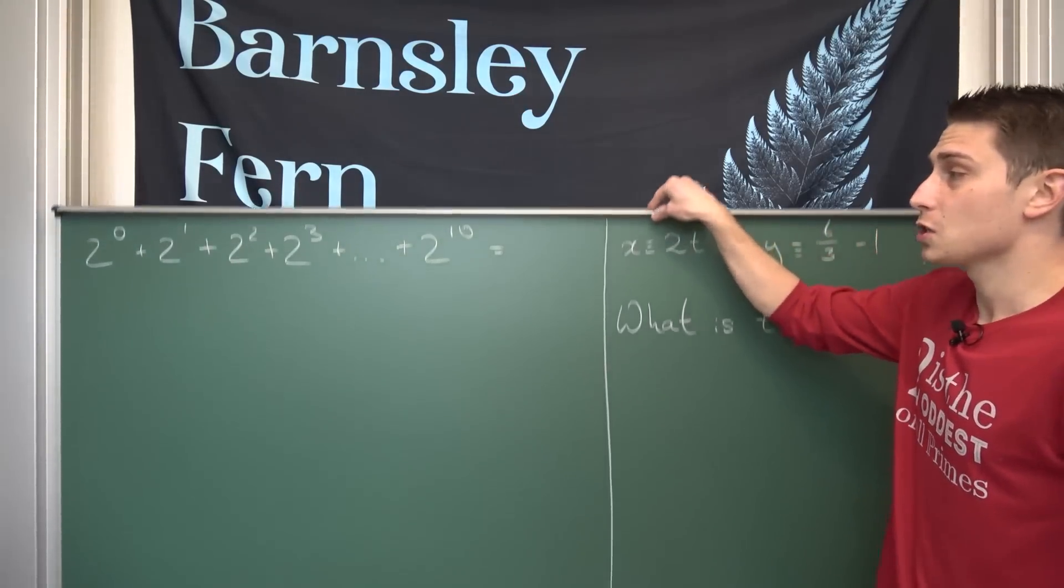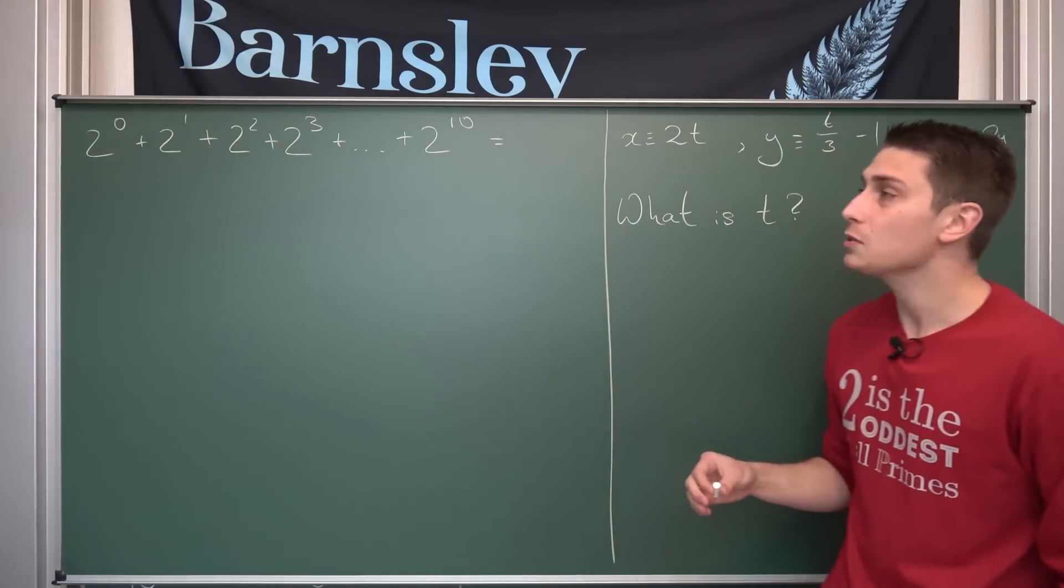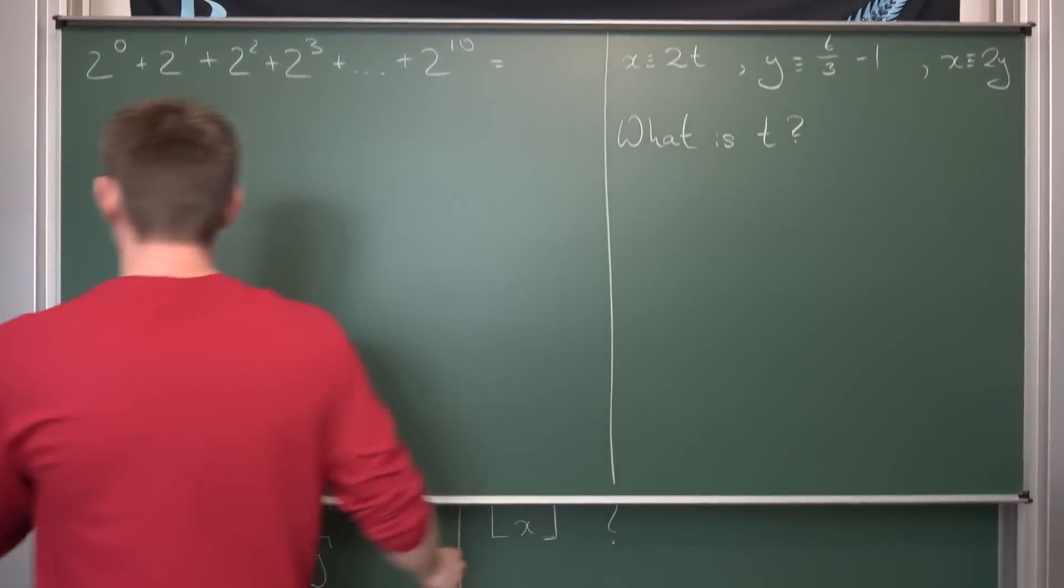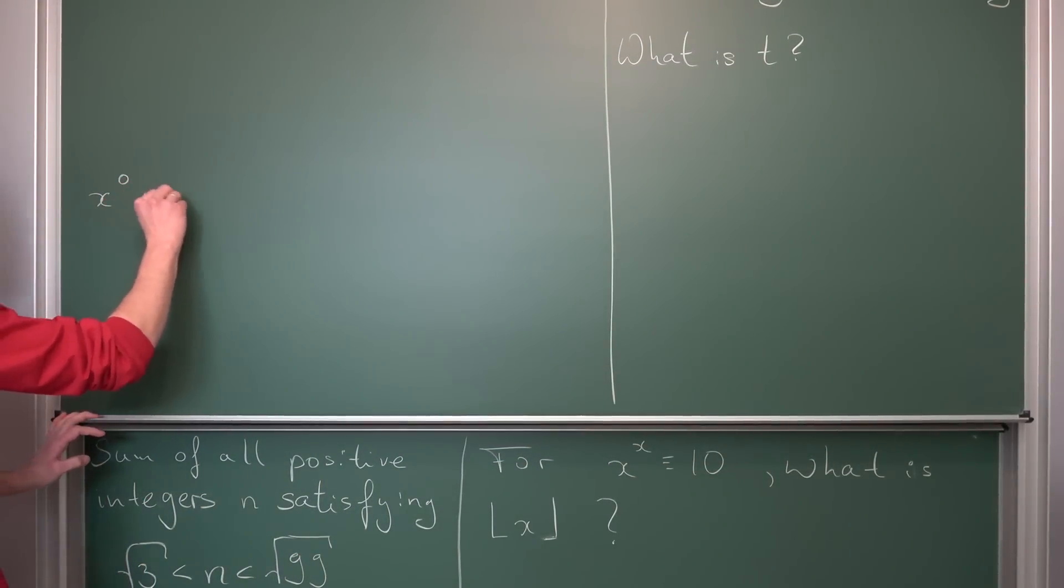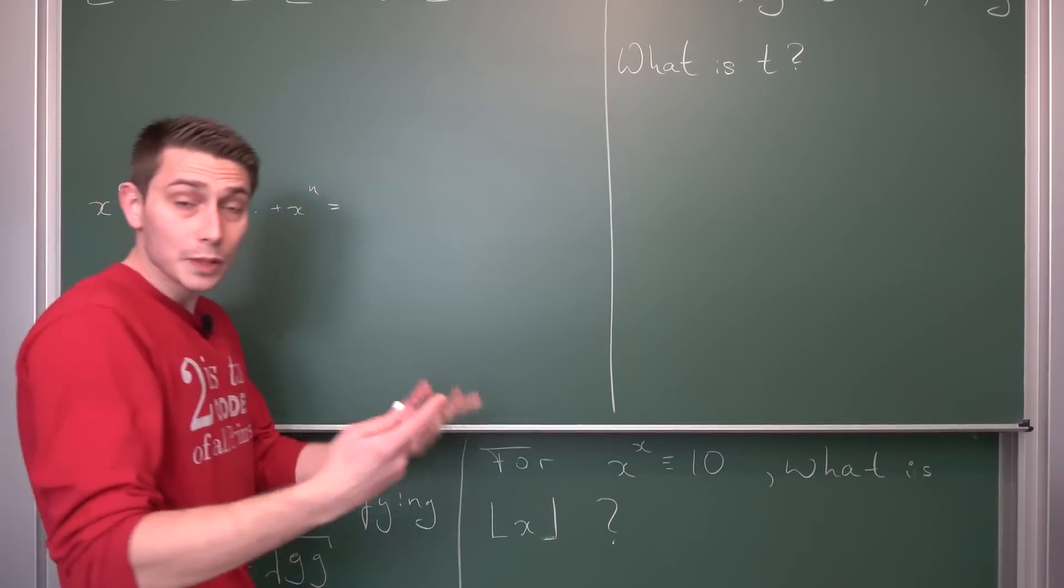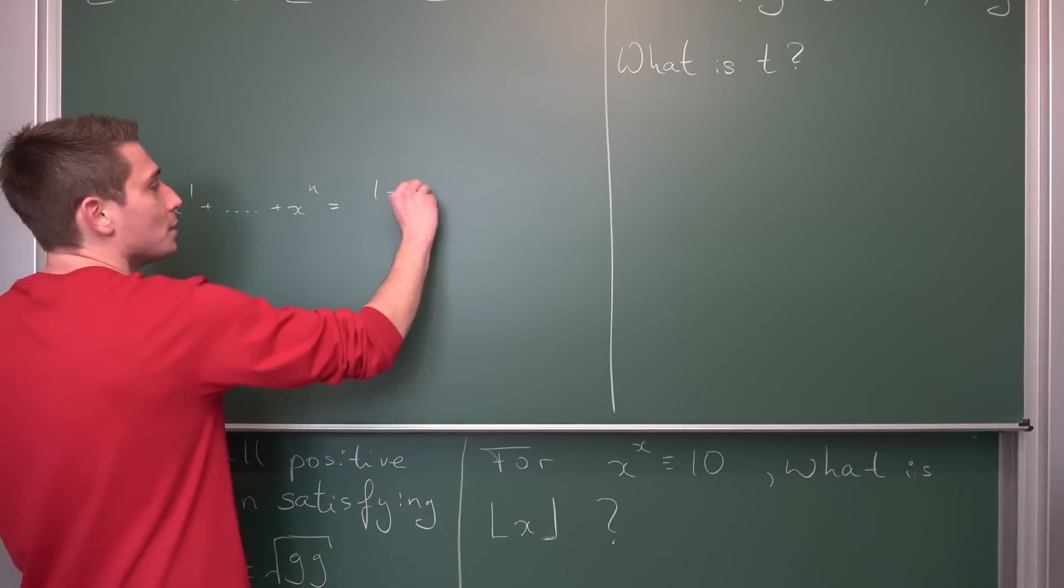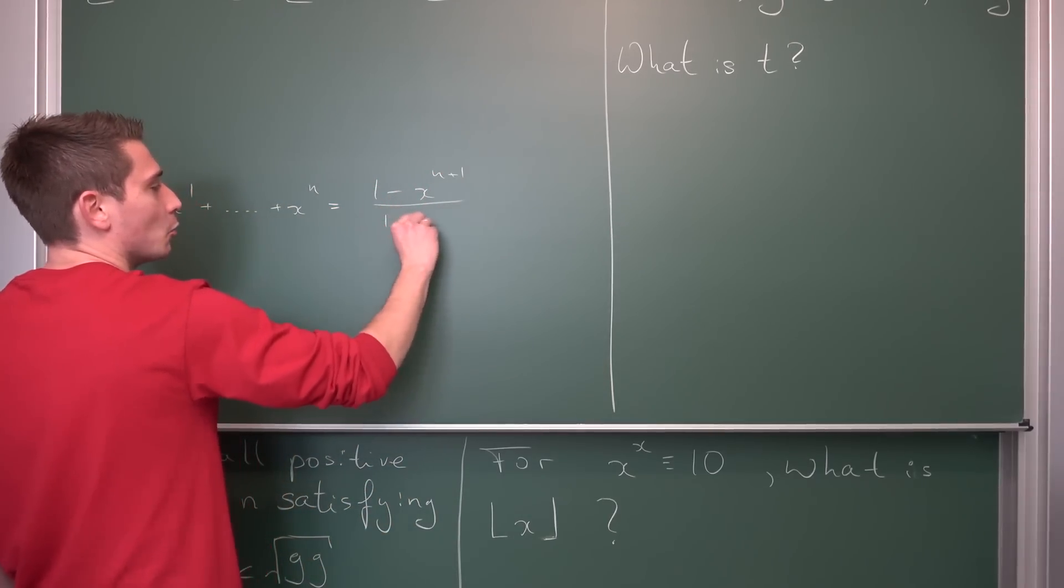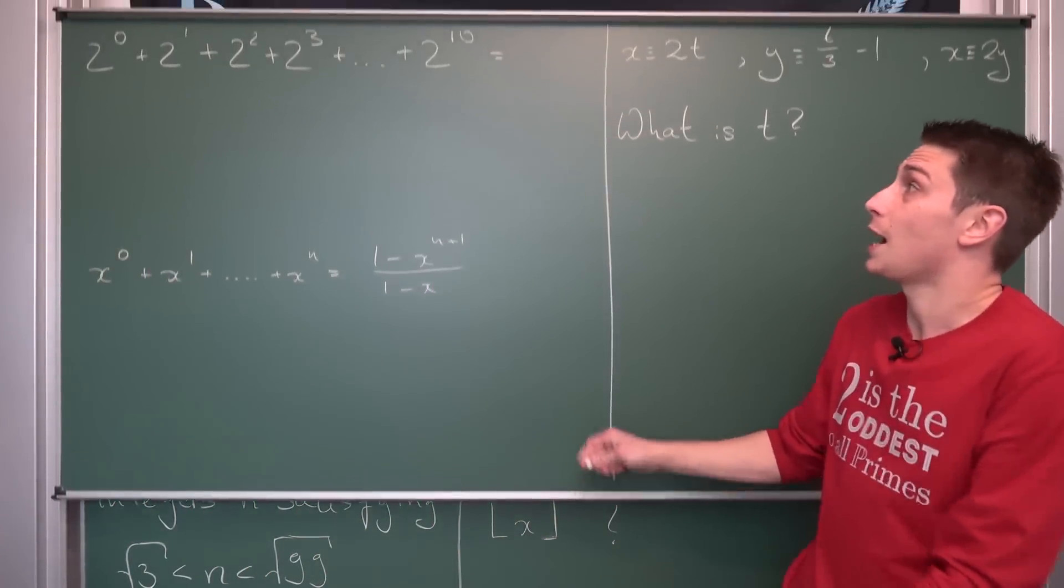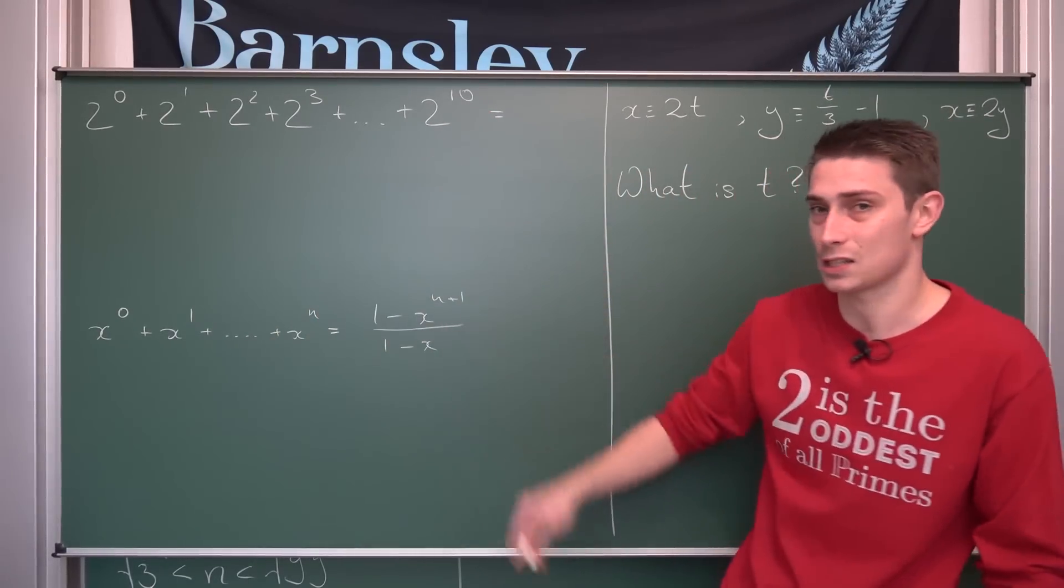So the first problem involves a summation of powers of two and the way to go here is I think by the geometric series. That's the easiest thing you could possibly do. Let us remember what the geometric series looks like. So if we have x to the zero power plus x to the first power plus dot dot dot up until x to the nth power, we can actually rewrite this as 1 minus x to the n plus 1 power divided by 1 minus x. So now we just need to identify what our n actually is. So the highest power of 2 which is 10, n is equal to 10, and also what the base is. Well the base obviously is 2.